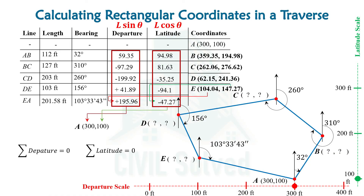So this is the only difference between the calculation of rectangular coordinates in an open traverse and the calculation of rectangular coordinates in a closed traverse. I hope you have now got the concept. Thank you for watching this video.